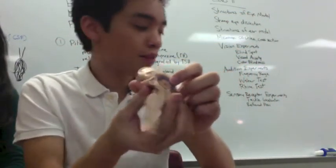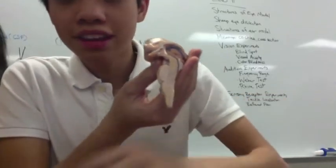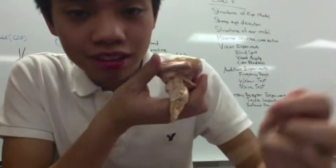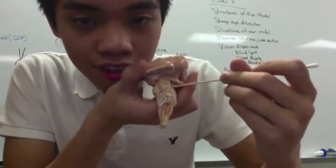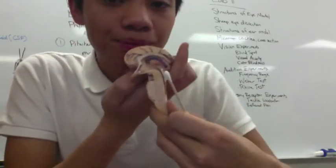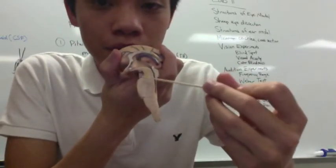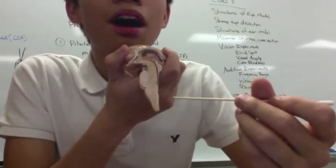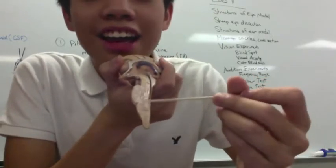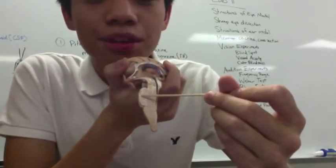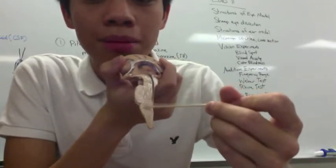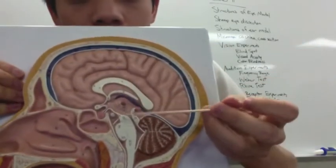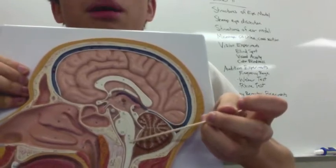You have the different parts of your brain stem. You have your midbrain on top, your pons, and your medulla oblongata. You can also see it in the half brain model: midbrain, pons, medulla oblongata.